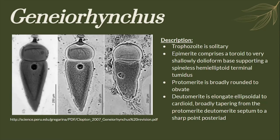The trophozoite of the genus Ganymedes is solitary, while its epimerite comprises a toroid to very shallowly dolabriform base, supporting a spineless hemieliptoid terminal medus, while its protomerite is broadly rounded to obovate. Lastly, its deutomerite is elongate ellipsoidal to cardioid, broadly tapering from the protomerite-deutomerite septum to a sharp posterior point.